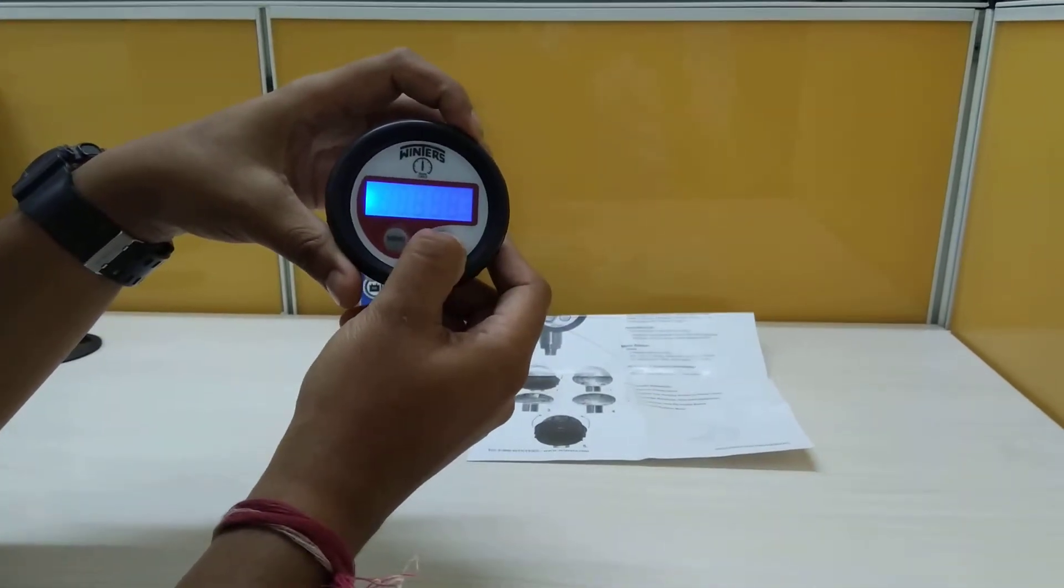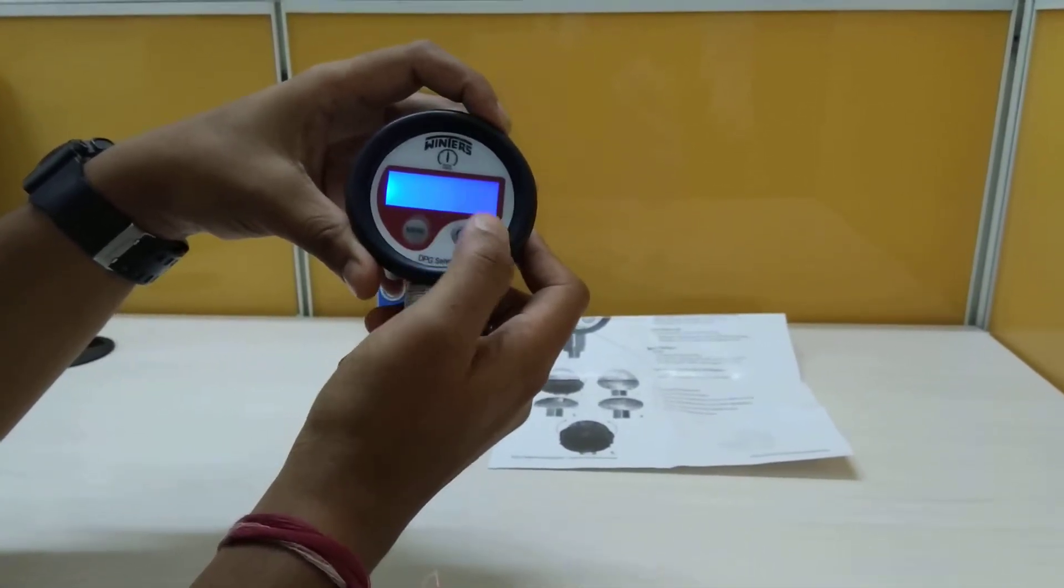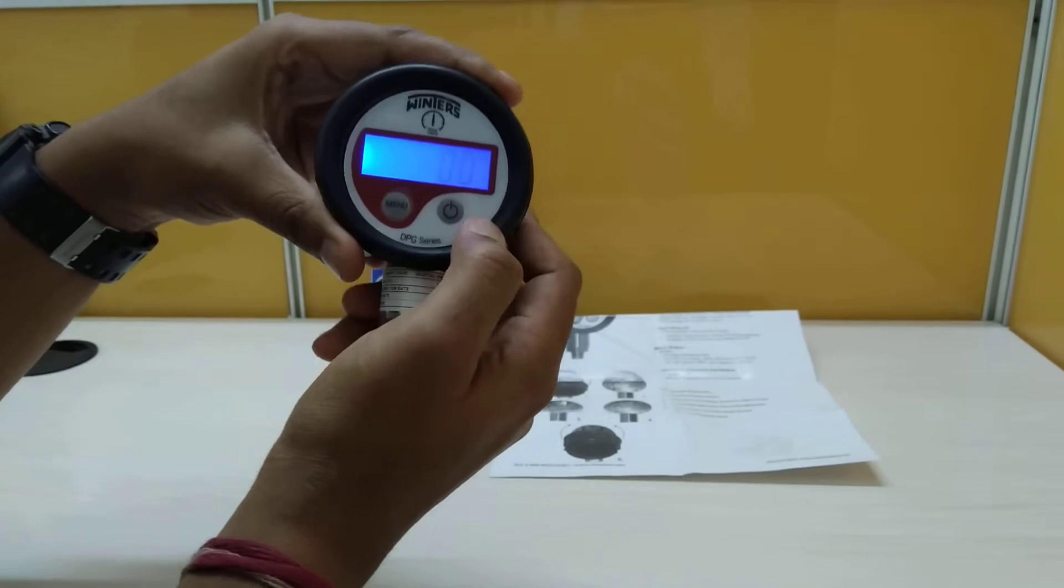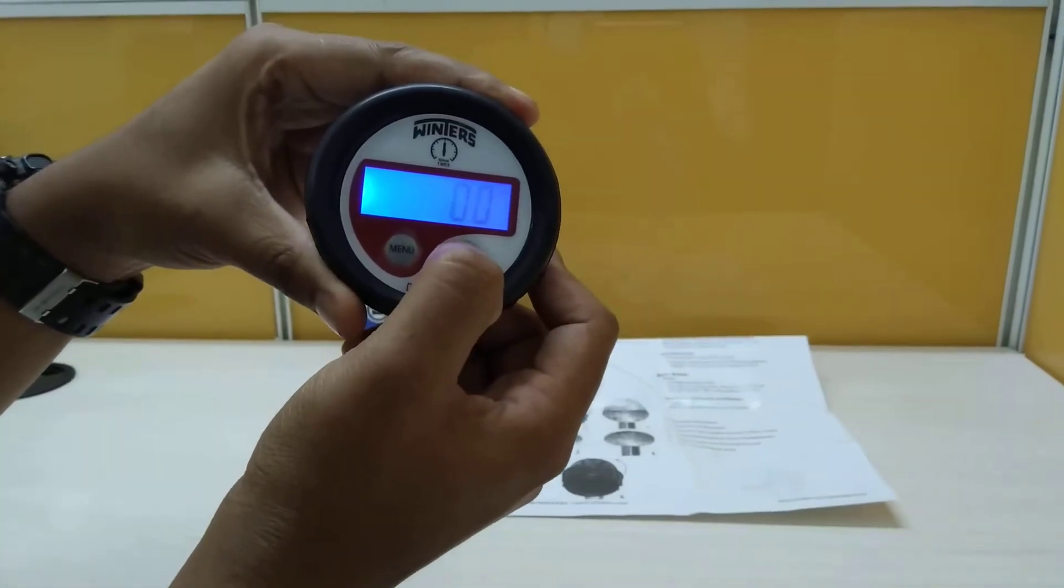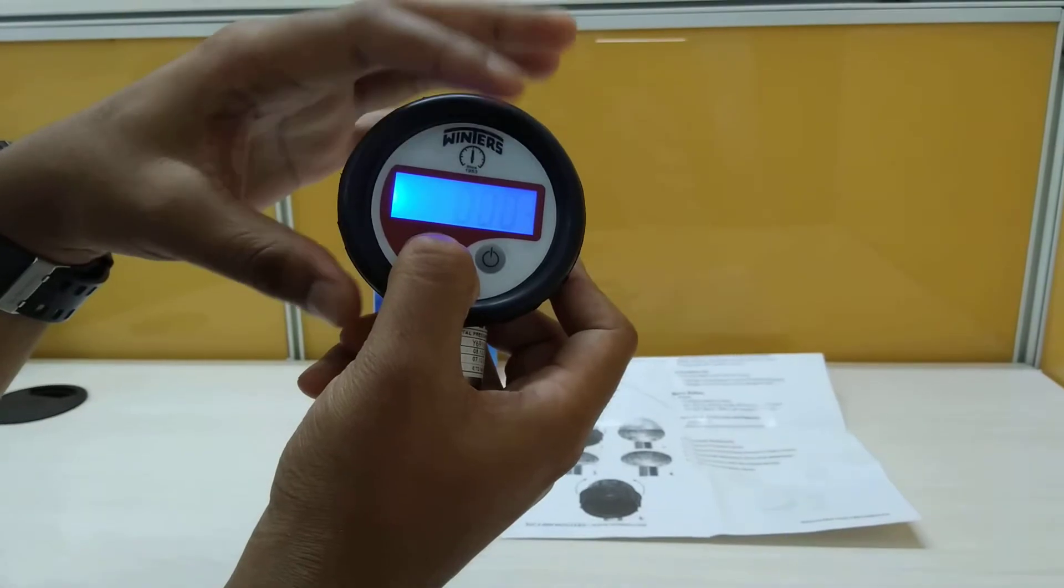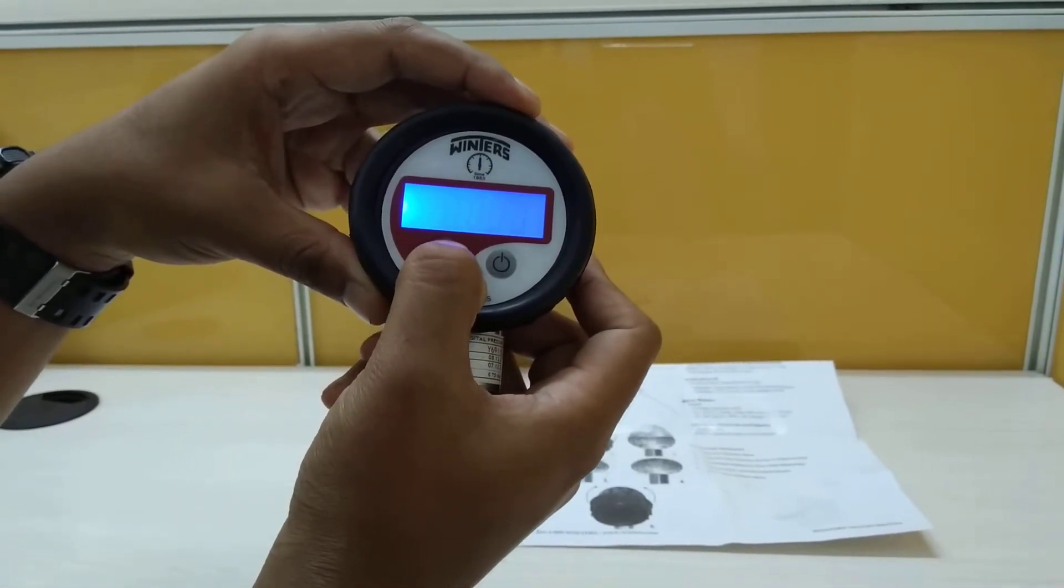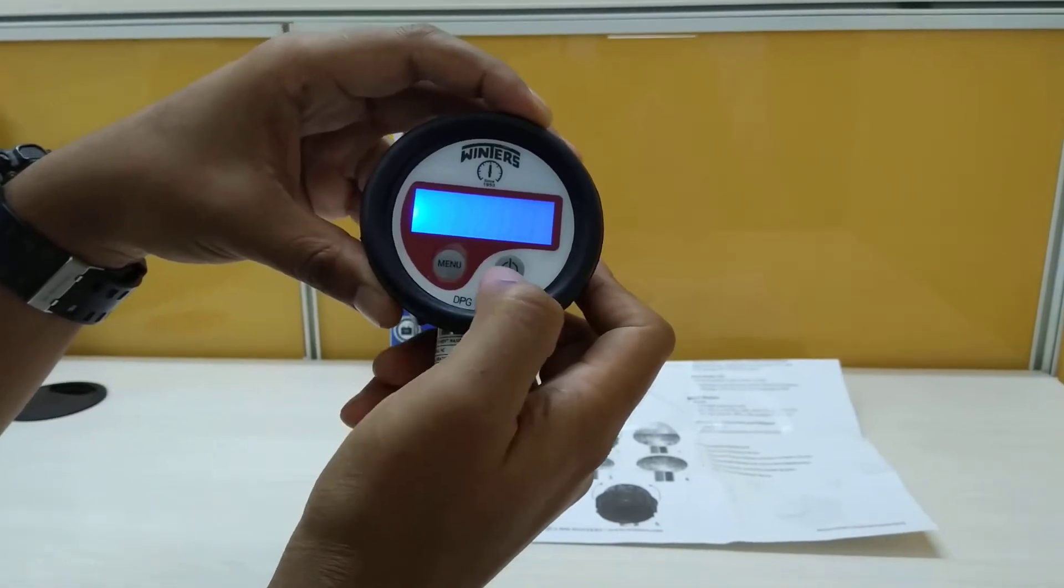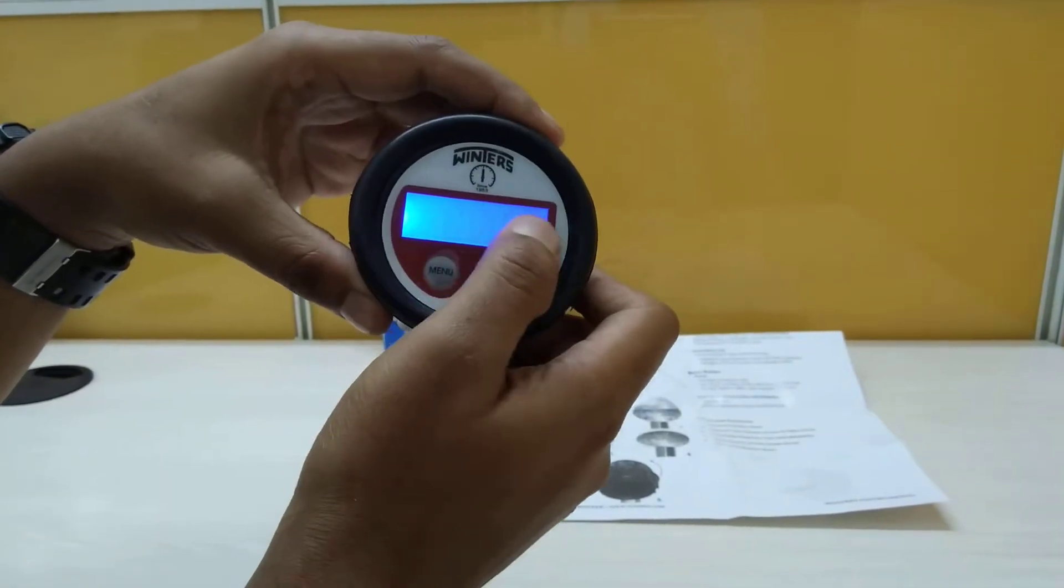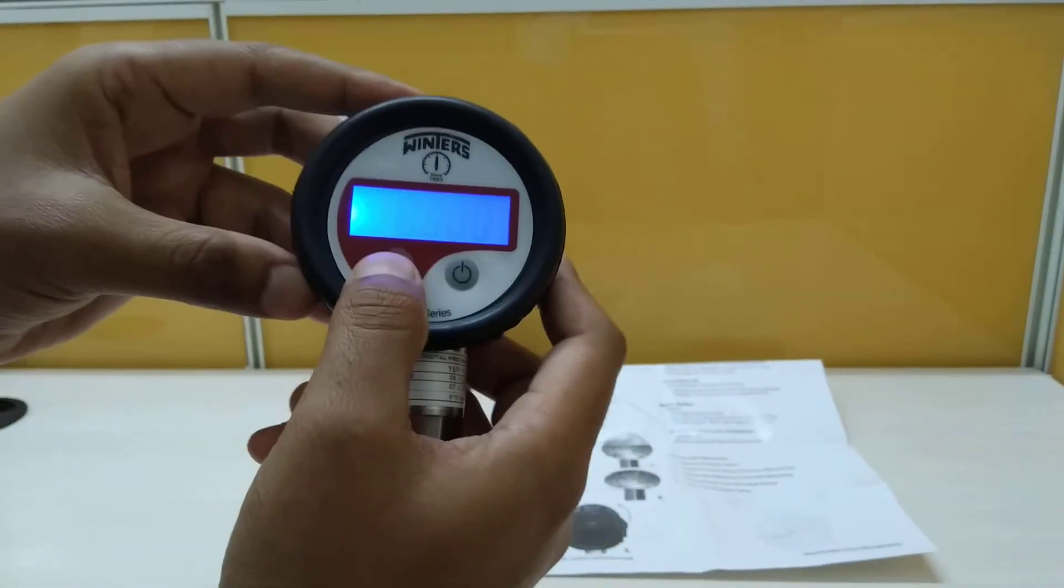This is a two button function - there's a power button and the menu. We can toggle between the engineering units which is psi, bar, kg per centimeter cube, or MPA. This has got a backlit option and the resolution is 1 mmHg.